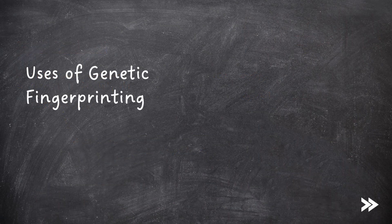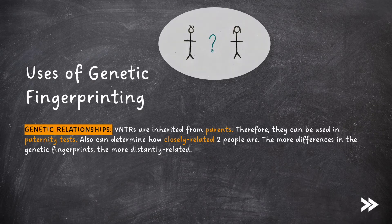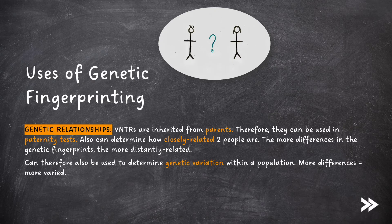Finally, we need to know about the uses of genetic fingerprinting. First of all, they can be used to determine genetic relationships. VNTRs are inherited from parents, therefore they can be used in paternity tests. Also, they can be used to determine how closely related two people are — the more differences in the genetic fingerprints, the more distantly related. VNTRs can therefore also be used to determine genetic variation within the population. The more differences, the more genetically varied the population.